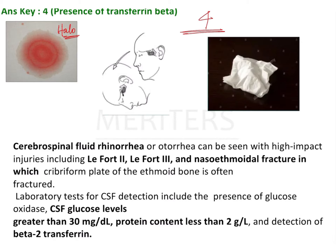It is similar to a drop of water falling on the floor — it touches the center first and then spreads evenly. The blood clots and forms the central area, while the CSF has no clotting components and spreads farther, wetting a larger surface area. This is the halo effect.